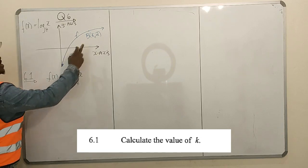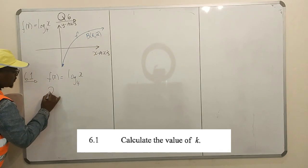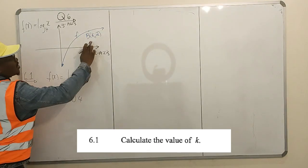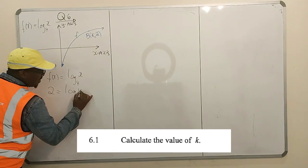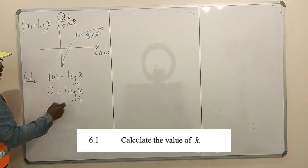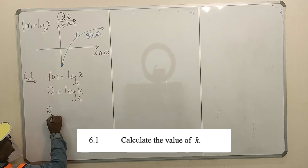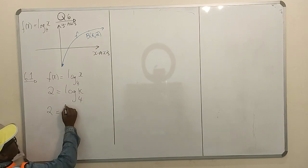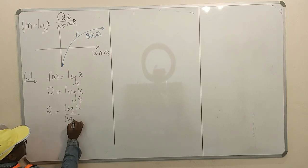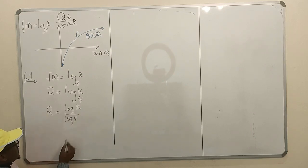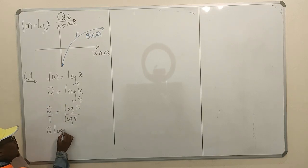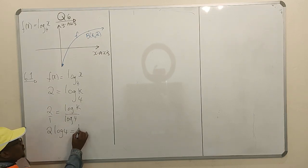We say f(x) equals log₄(x), right? Our f(x) there is 2, so we have 2 equals log₄(k). What is our x there? Our x is k here. We're trying to find the value of k. So, 2 equals log k over log 4. Then you cross multiply. You have 2 log 4 equals log k.